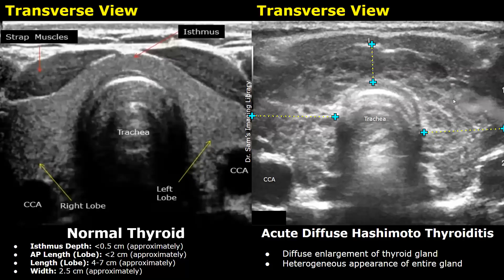In acute diffuse Hashimoto thyroiditis, there is diffuse enlargement of the thyroid gland. The whole gland will have a heterogeneous appearance — you can see a difference in appearance of the thyroid, as the echo texture is heterogeneous.